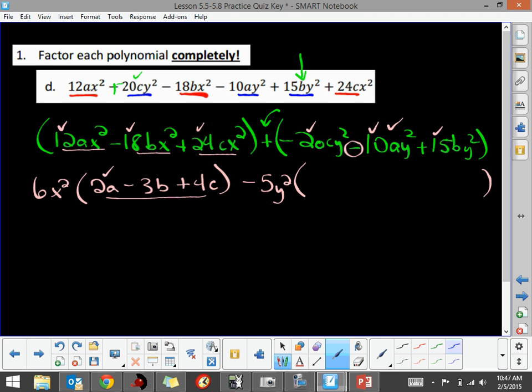So this negative 20 divided by negative 5 will be a positive 4C. Took out the Y squared. This negative 10 divided by negative 5 will be a positive 2A. And this positive 15 divided by negative 5 will be a negative 3B.